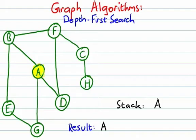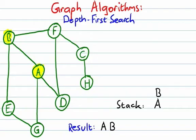Now we take a look at the vertex at the top of the stack, A, and all of the vertices adjacent to it that haven't yet been visited — that's B, D, and G. We're going to visit the first of these in alphabetical order, which is B. So we take vertex B, push it onto the stack, visit it, and mark it as visited.